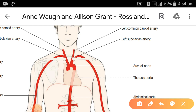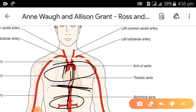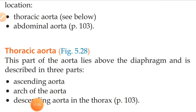When the aorta exits the heart it is the ascending aorta. After that, the curving portion is the arch of aorta. Then comes the descending aorta. The thoracic aorta lies above the diaphragm and is described in three parts: the ascending aorta, the arch of aorta, and the descending aorta in the thorax.